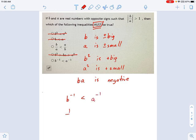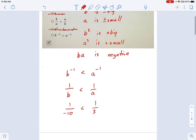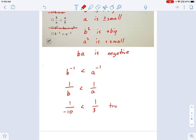Well, maybe. What that means is 1 over b is less than 1 over a. And there are cases where this is going to be true, like, for example, 1 over 10, 1 over negative 10 is less than 1 over 3. That's true. Negative numbers are less than positive numbers. But there's another case that's not true, like 1 over positive 10, 1 over negative 3. That is false.